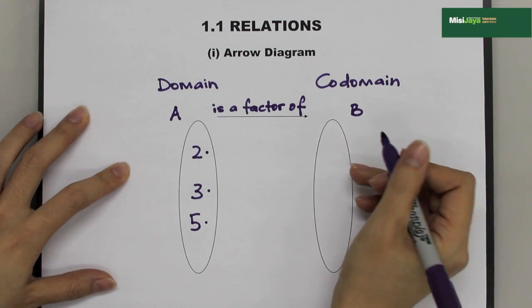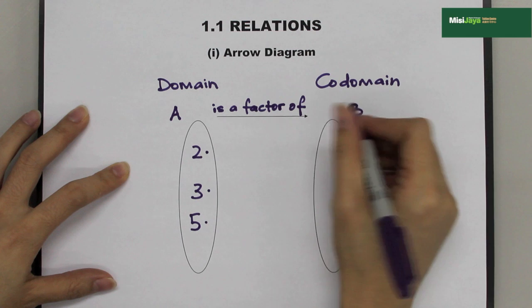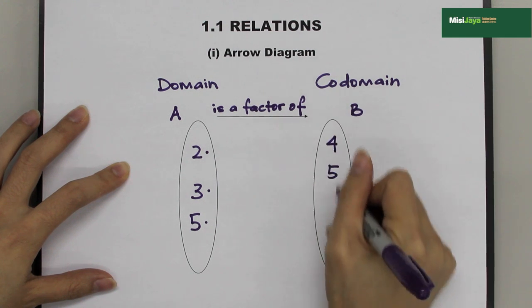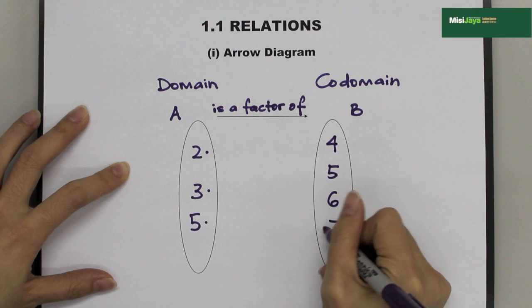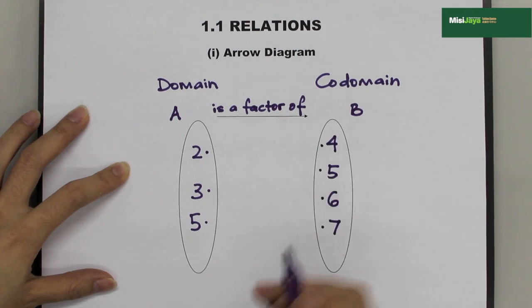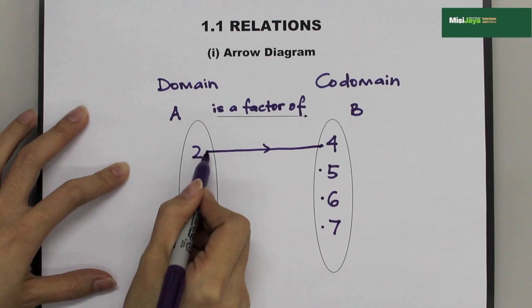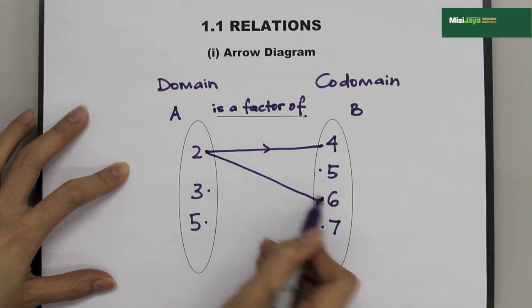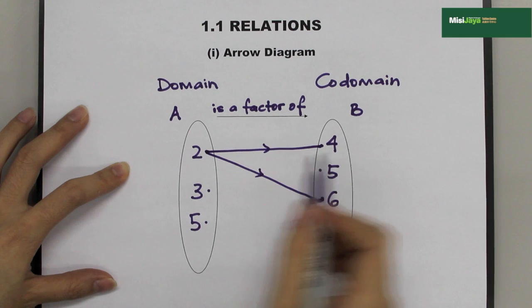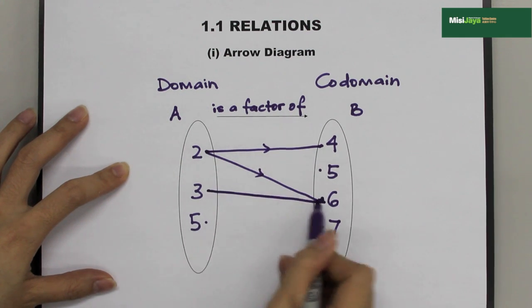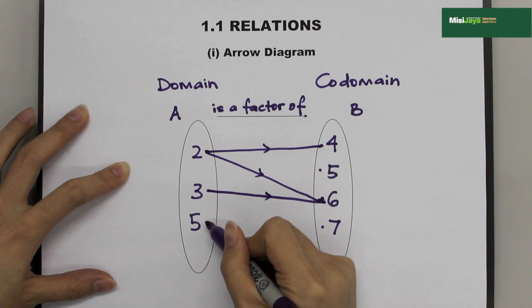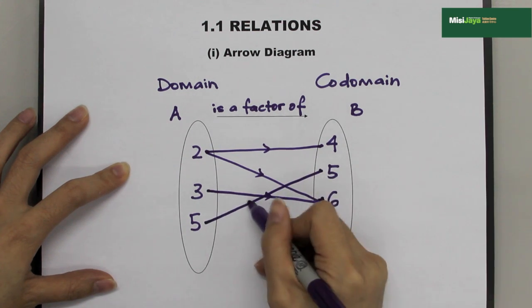Whereas, the images in the codomain are 4, 5, 6, and 7. 2 is a factor of 4, 2 is also a factor of 6, 3 is a factor of 6, 5 is a factor of 5.